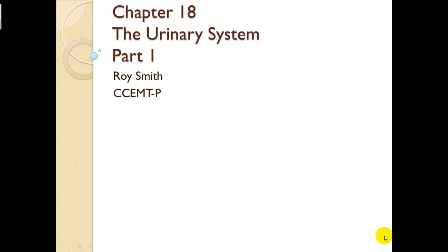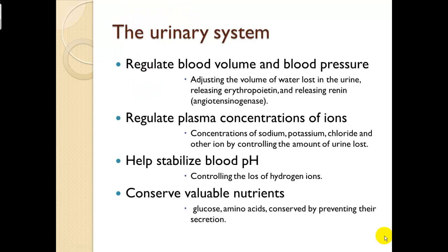This is chapter 18, the urinary system, part one — a general overview. The urinary system does several things: it regulates blood volume and blood pressure, regulates plasma concentrations, helps stabilize blood pH, and conserves valuable nutrients.